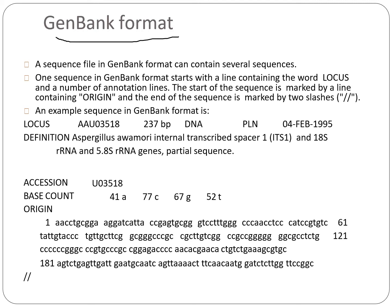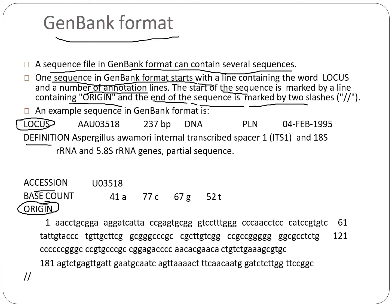In GenBank format, a sequence file can contain several sequences. Each sequence entry starts with a line containing the word 'LOCUS', followed by a number of annotation lines such as DEFINITION, ACCESSION, BASE COUNT, and ORIGIN. The start of the sequence is marked by 'ORIGIN', similar to how EMBL uses 'SQ', and both end with two slashes '//'.